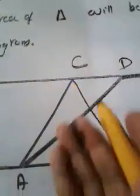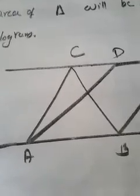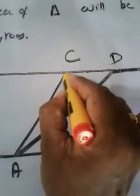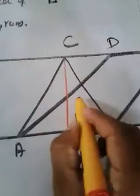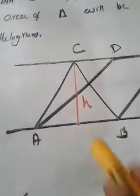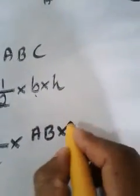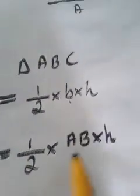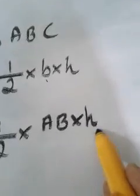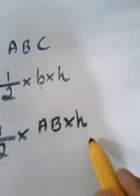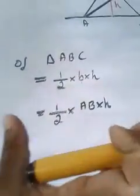Since the height h is not explicitly given, let me draw it — it is the perpendicular from vertex C to base AB. We denote this height as h. So area of triangle ABC = ½ × AB × h.